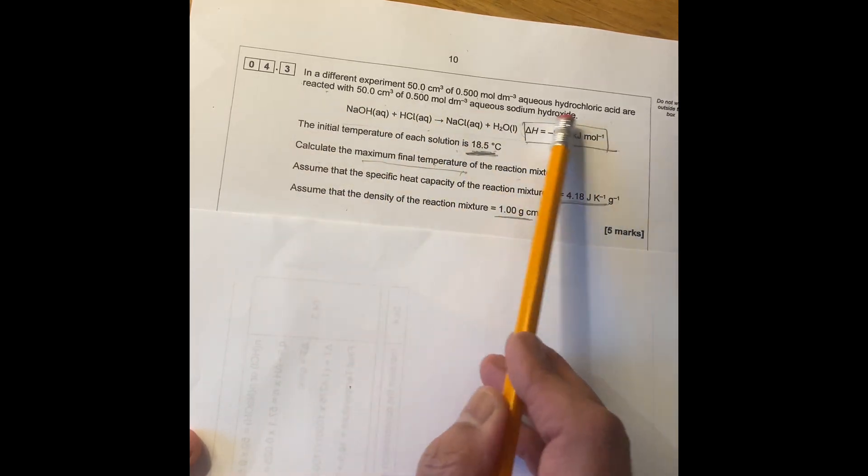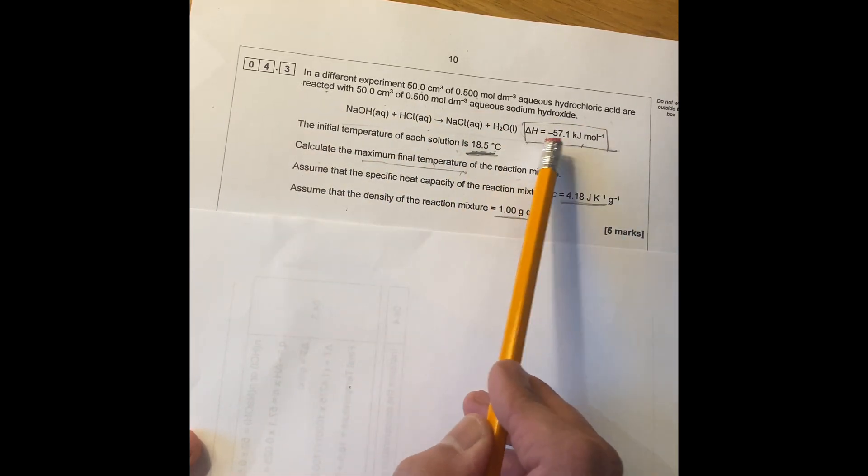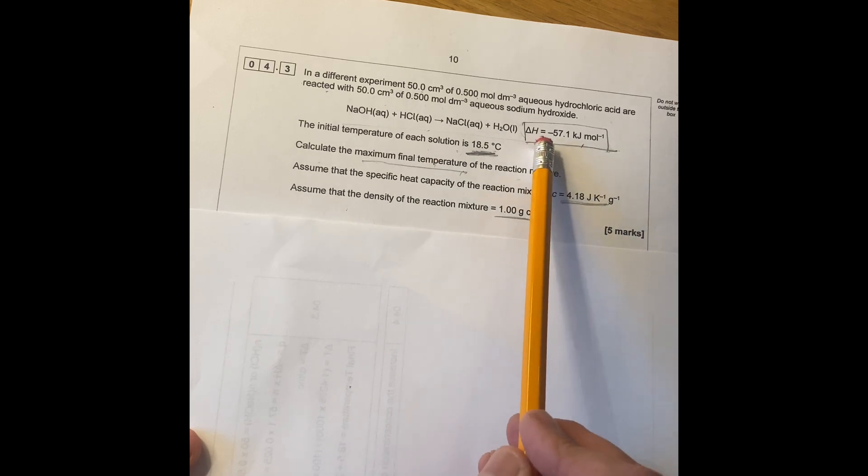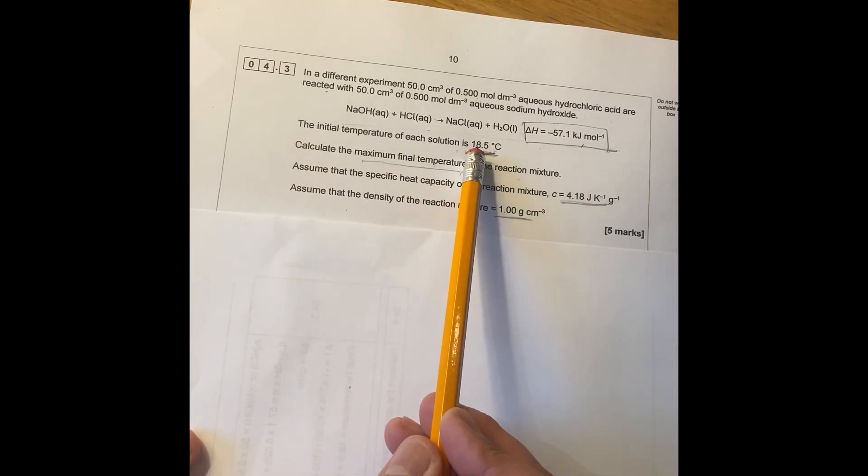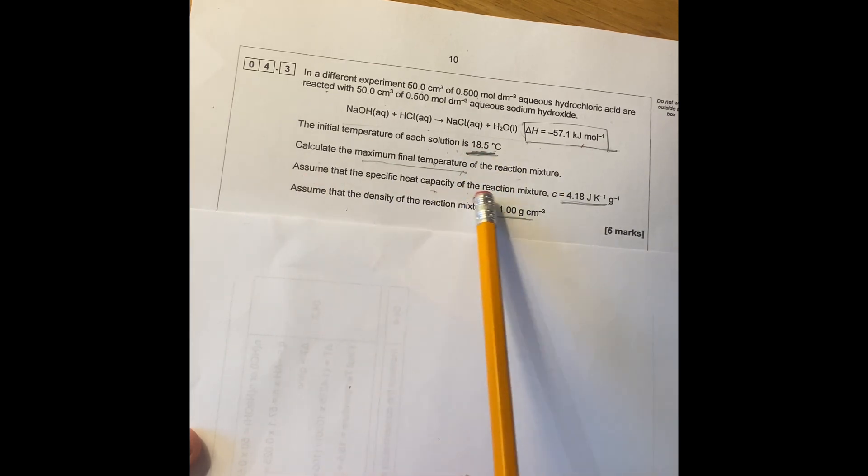50 cm cubed 0.5 M aqueous hydrochloric acid are reacted with 50 cm cubed 0.8 M aqueous sodium hydroxide. This is a reaction and delta H is minus 57.1. Just means it's an exothermic reaction. Initial temperature is 18.5. Assume specific heat capacity is 4.18 and density is 1 gram per cm cubed.